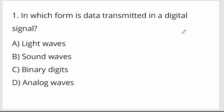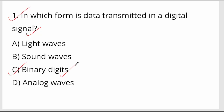In which form is data transmitted in a digital signal? Data transmission in a digital signal is from binary digit. Option C — binary digit is your right answer.